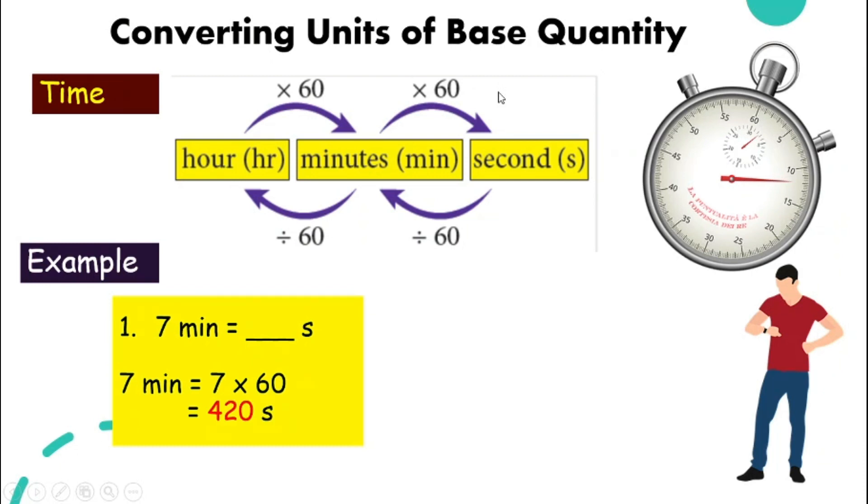How about 450 seconds? What is that in hour? Look at this diagram. We need two steps. So 450 divided by 60 and divided by 60 for another time. You will have 0.125 hour.